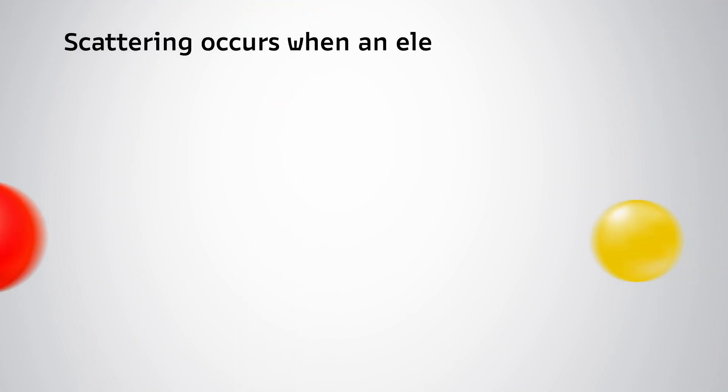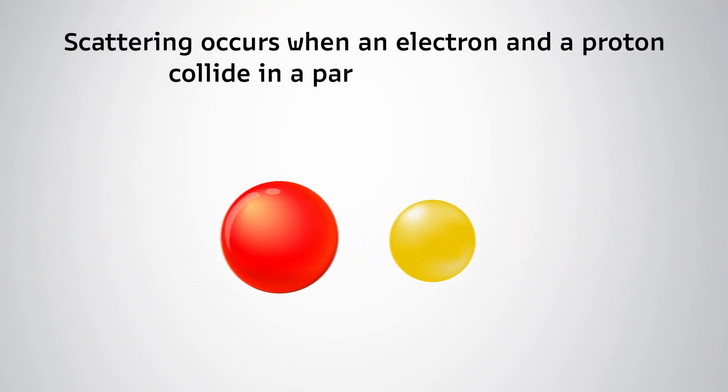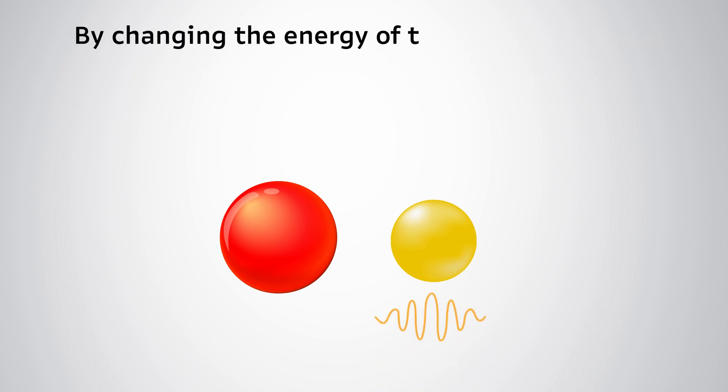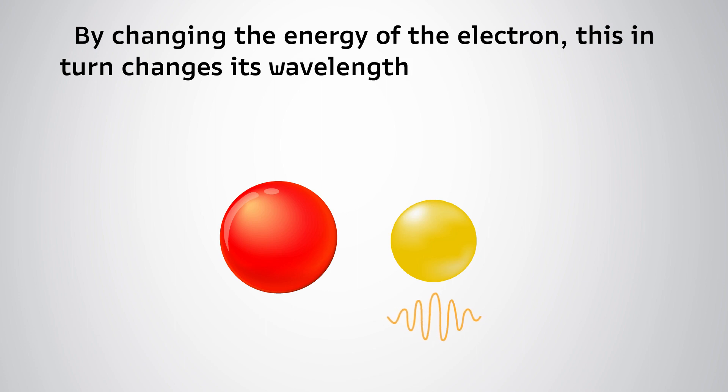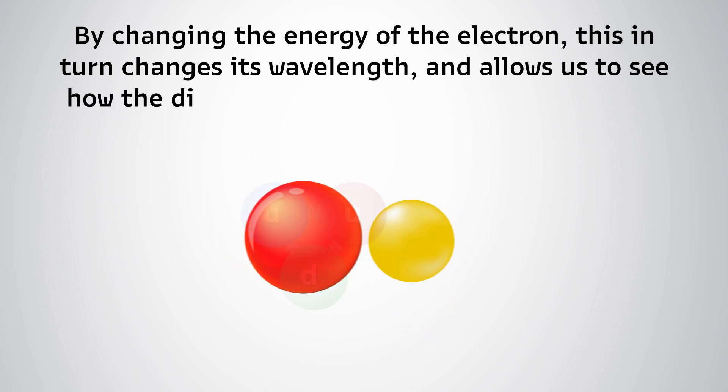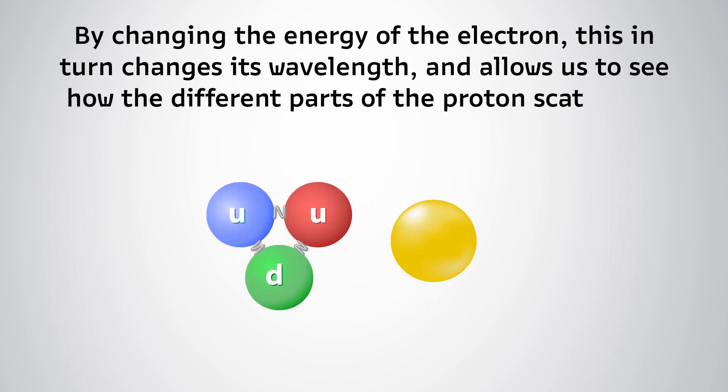Scattering occurs when an electron and a proton collide in a particle accelerator. By changing the energy of the electron, this in turn changes its wavelength and allows us to see how the different parts of the proton scatter off the electron.